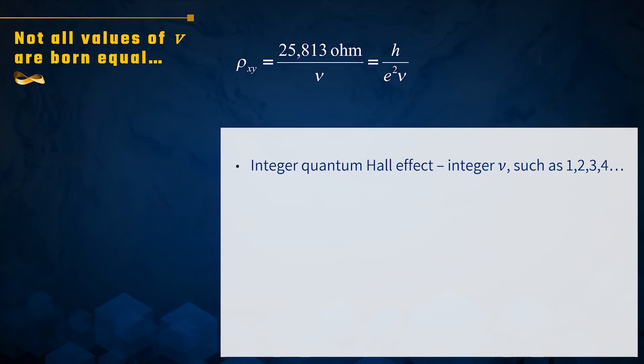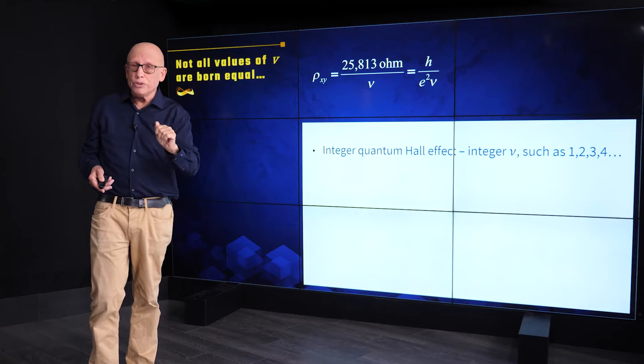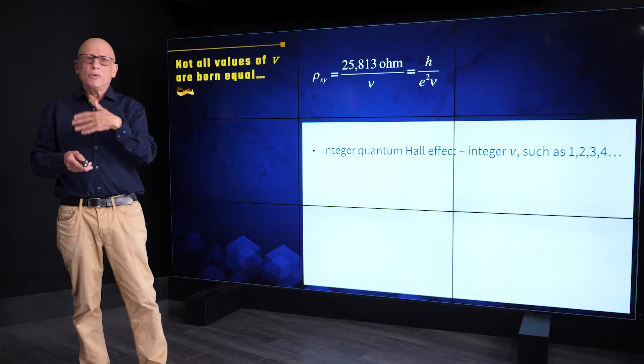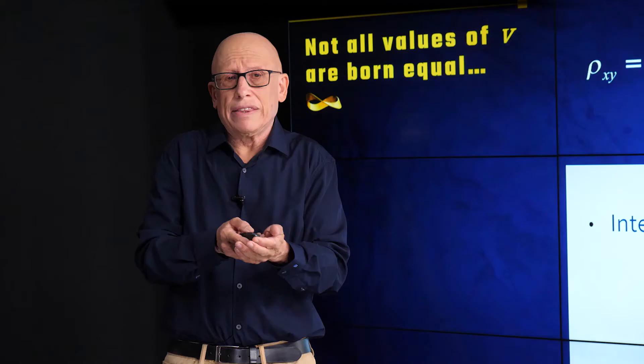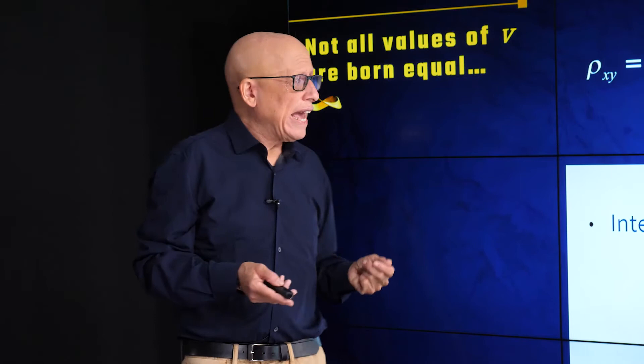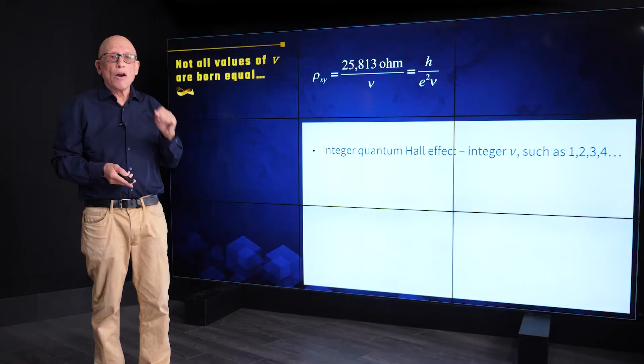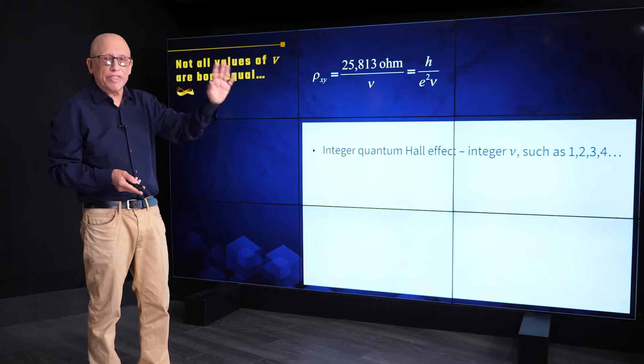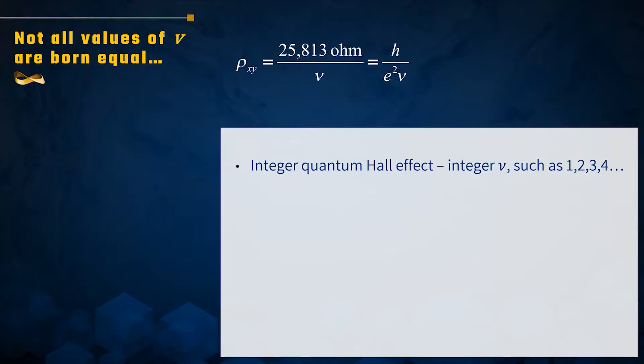Now, we saw that there are steps at various values of nu, and I emphasized nu equals 1. What values of nu give rise to steps? So here I am telling you the outcome of many experiments in tens of materials, in thousands of labs. And what we know is that there are two types of values of nu at which we get the steps. One is integer values. And I give you examples here: 1, 2, 3, 4. And it goes up to about 20, 30, that range of integers.